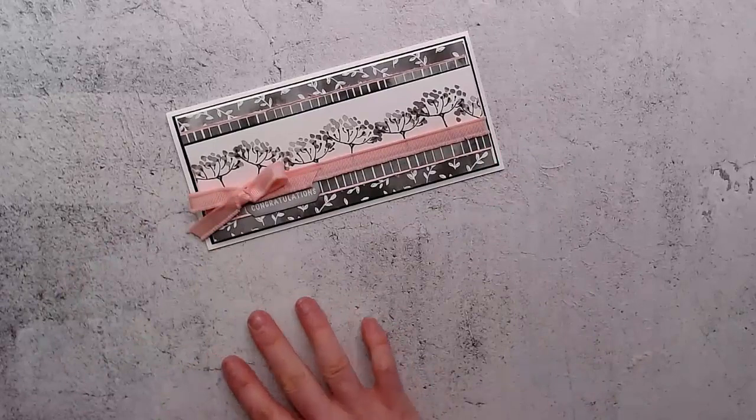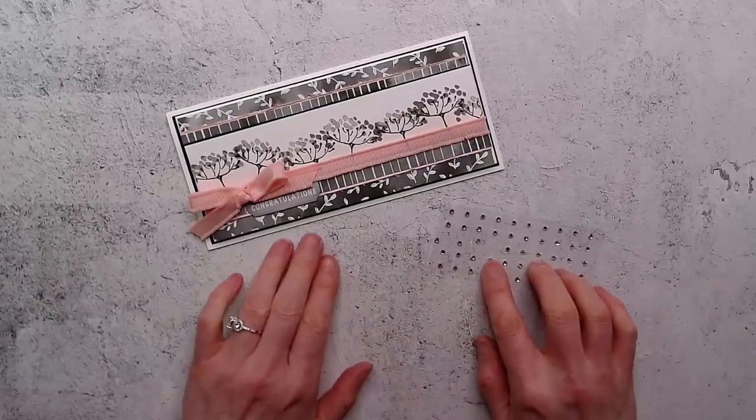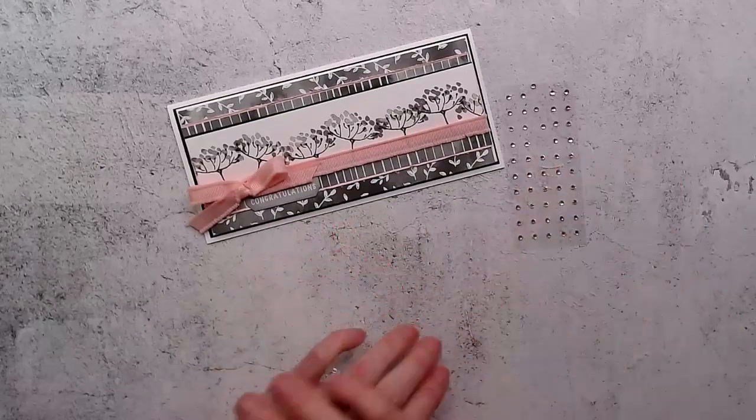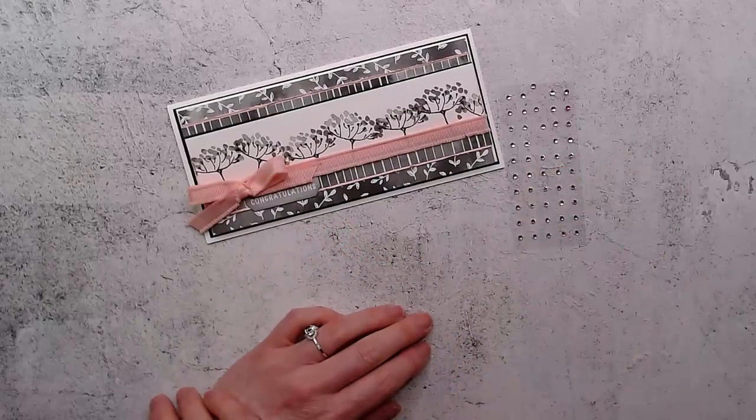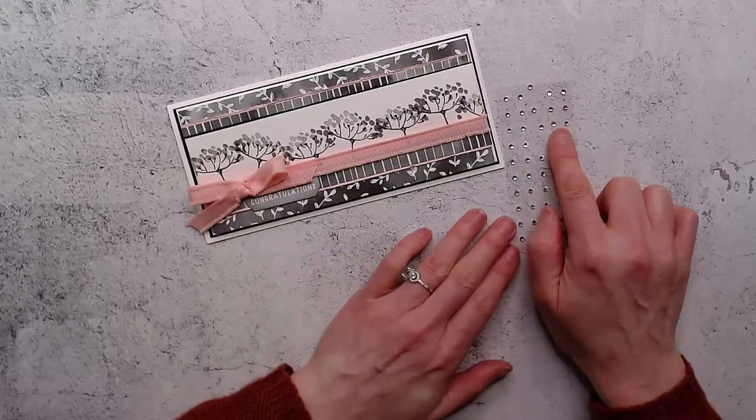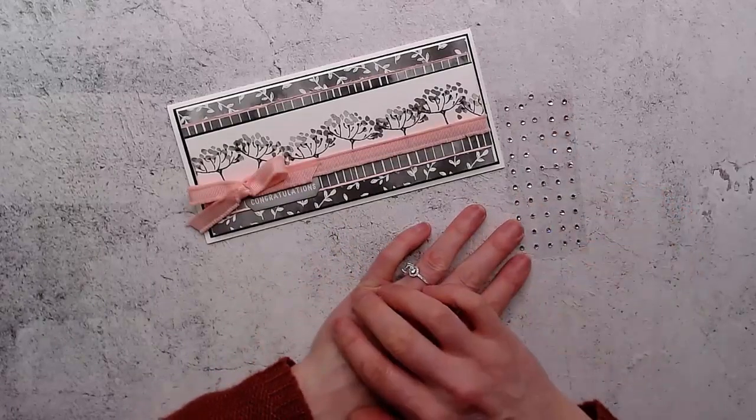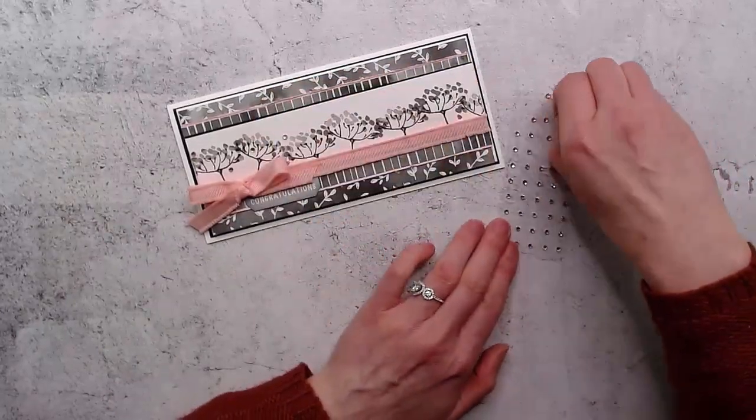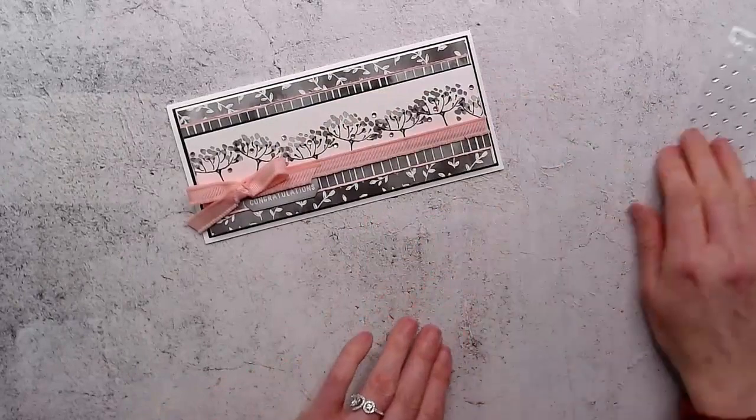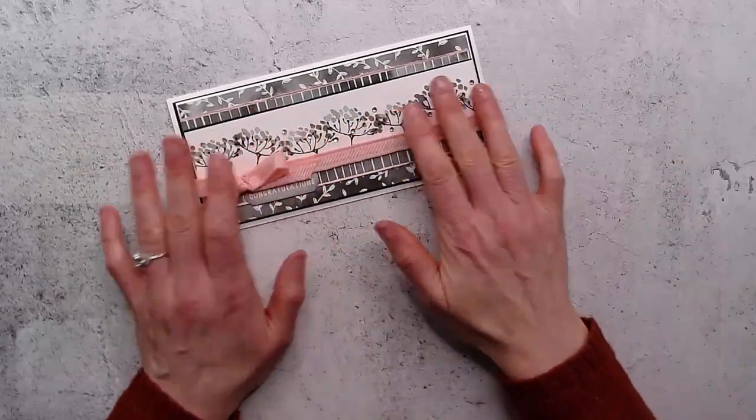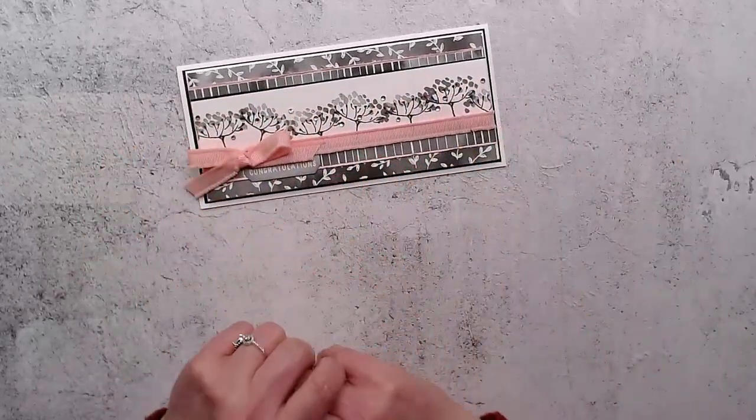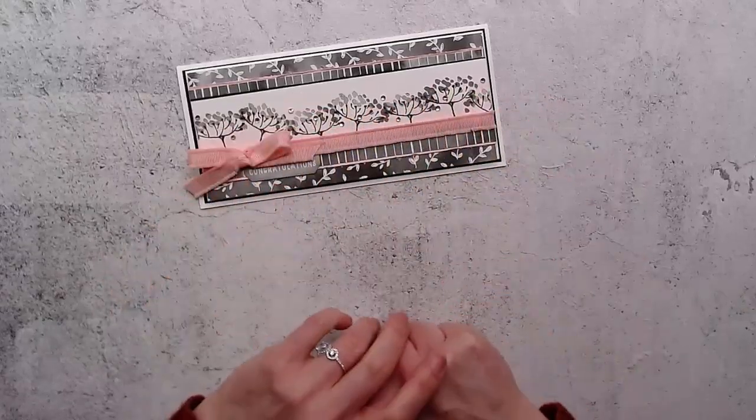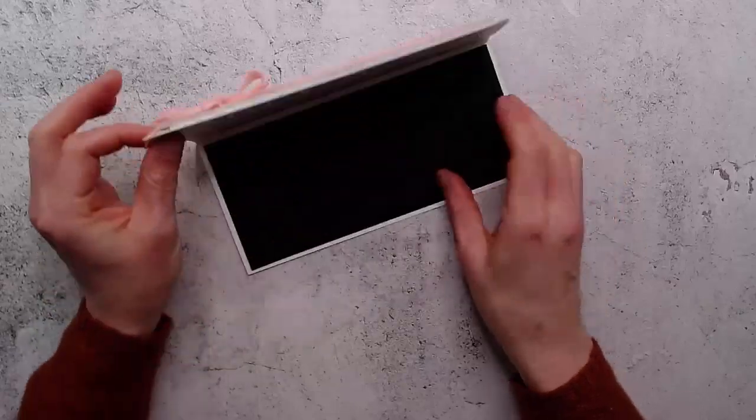We just need some gems - we can't have a card without gems. I have colored up some rhinestones using the flirty flamingo stampin blends marker, and I'm just going to place those in through the flowers. I quite like how you've got those dark flowers - the gray and the black - and then just some little bits of sparkle in through there.